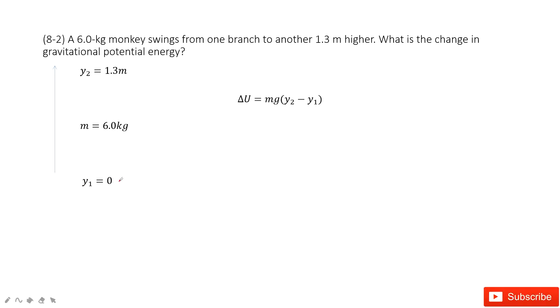And then the change of gravitational potential energy. The final gravitational potential energy is mgy2. The initial gravitational potential energy is mgy1. So we use the final gravitational potential energy minus initial potential energy equals the change of potential energy.